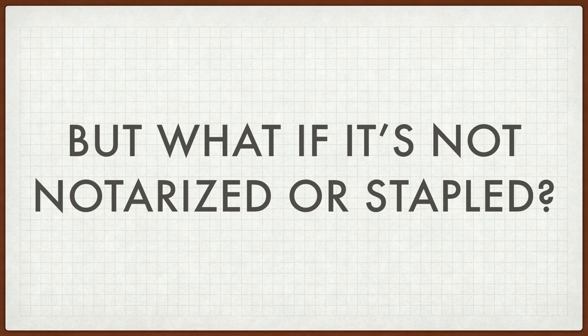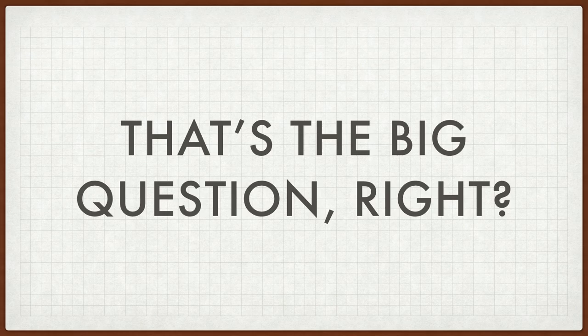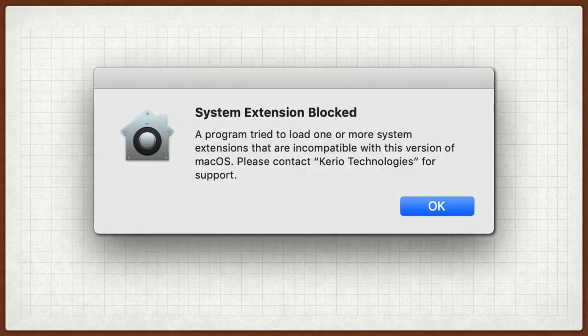But what if it's not notarized or stapled? That's why we're all here. We all want to know how this breaks. How many people saw this particular dialogue once we got to 10.14.5? It says 'a system extension has been blocked — a program tried to load one or more system extensions that are incompatible with this version of macOS. Please contact Karyo Technologies for support.' This was the Karyo VPN client before they actually got it notarized. So how do we deal with packages and software, both kernel extensions and applications in their entirety, that are either not signed correctly or not notarized at all?